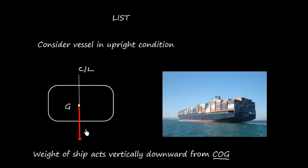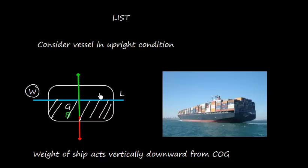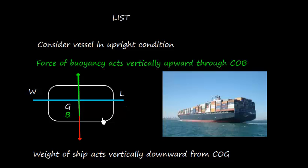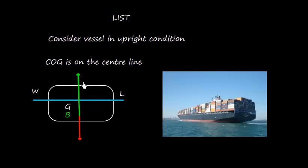The weight is acting vertically downward from the COG. This is our underwater portion below the waterline. The force of buoyancy will act vertically upward through B, the center of buoyancy (COB). The force of buoyancy acts vertically upward through the COB, which is the geometrical center of the underwater volume. We assume that the COG is on the centerline, so the vessel is in an upright condition.